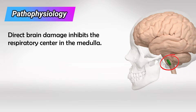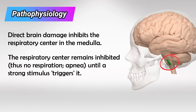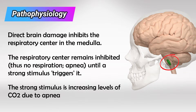Here's the explanation of why it happens: if there is brain damage that involves the medulla and the breathing centers, it will inhibit the respiratory drive and cause apnea, so the patient stops breathing. The respiratory center will remain inhibited until a strong stimulus triggers it. Due to apnea, carbon dioxide levels in the blood will keep rising, and when it reaches a critical state it will trigger the medulla. This will cause rapid breathing, or tachypnea, as the brain tries to wash out all this carbon dioxide. Then there will be another episode of apnea until carbon dioxide rises again, repeating the cycle.